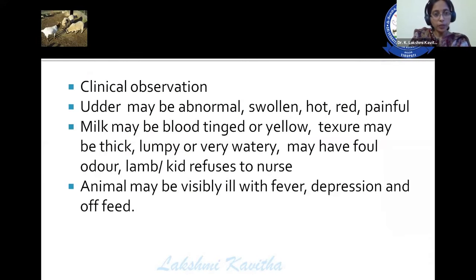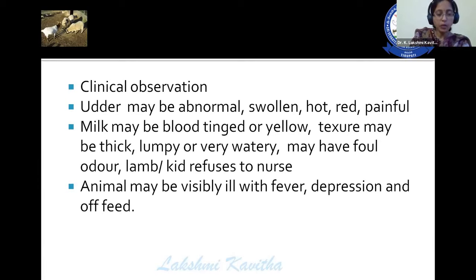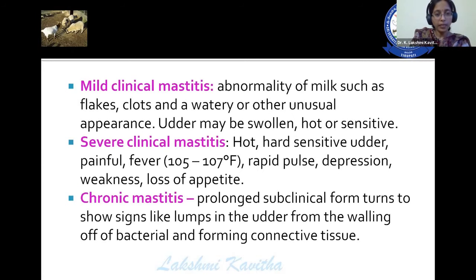These are the different udder conformations — the first one is perfect, whereas the rest show possibility for the occurrence of mastitis. Abnormal teat canals or abnormal teats are also responsible for mastitis in sheep and goats. Clinical observations: the udder may be swollen, hard, red, and painful. Milk may contain blood or be yellow, with thick, lumpy, or watery texture and foul odor. Lambs or kids may refuse to nurse. The animal may be visibly ill with fever, depression, and off-feed. Mild clinical, severe clinical, and chronic mastitis are all observed.